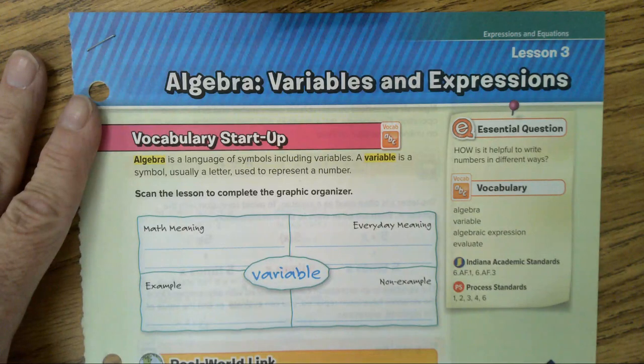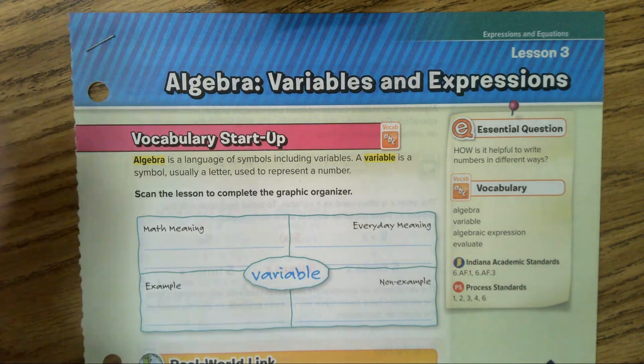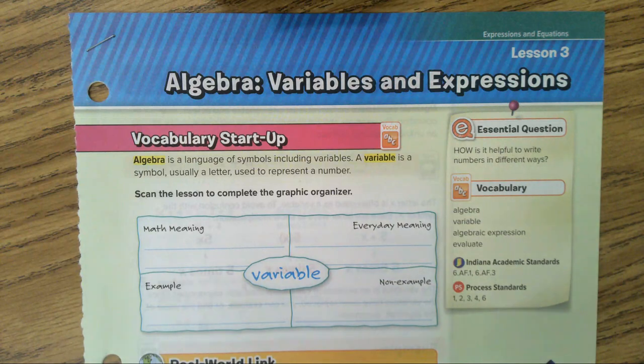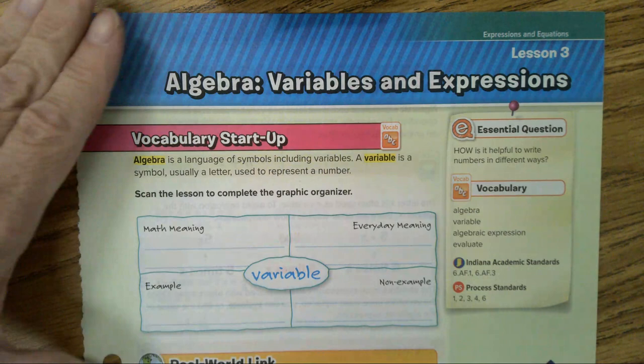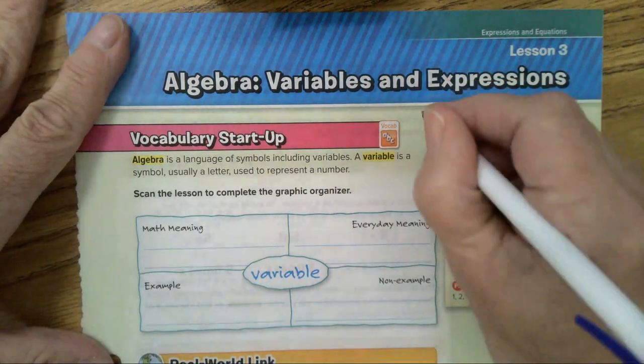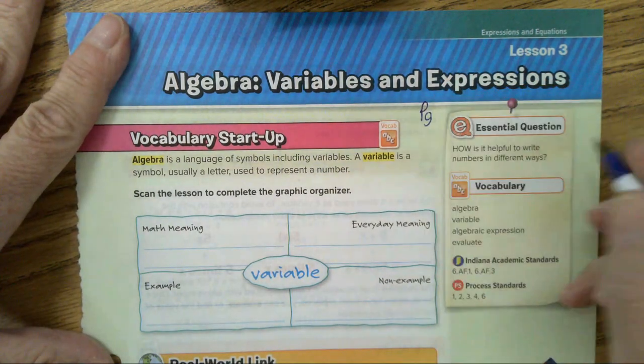Hi, this is Mrs. Robertson and today we are going to be doing Lesson 3 from Chapter 6 and the title is Algebra, Variables, and Expressions. This is located on page 449.